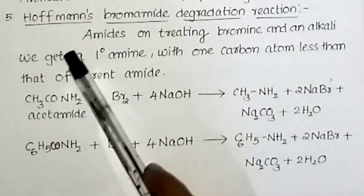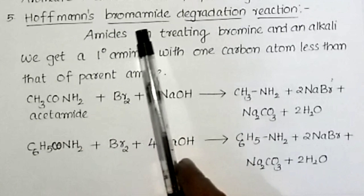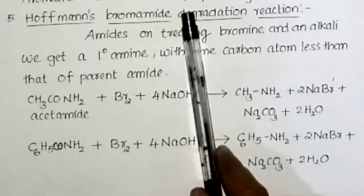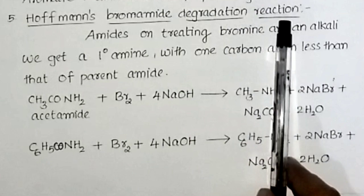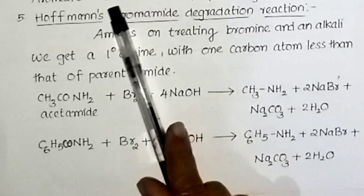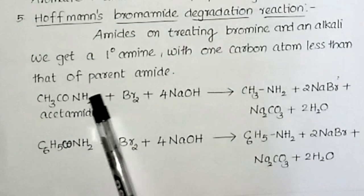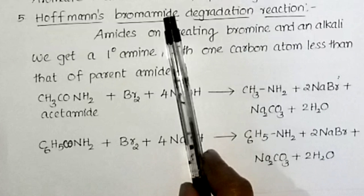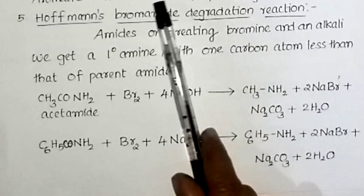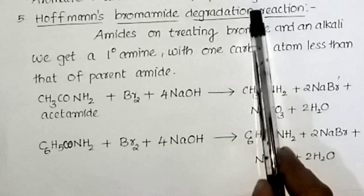The next method of preparation is Hofmann's bromamide degradation reaction — a very important name reaction. In this reaction, an amide is treated with bromine in the presence of an alkali, and we get a primary amine with one carbon atom less than that of the parent amide. Because one carbon is lost, it is called a degradation reaction.